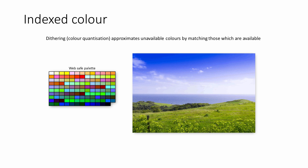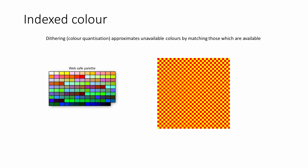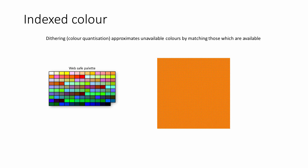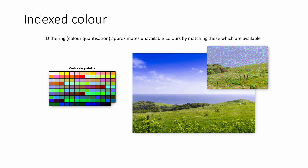Dithering works by putting colours that are available next to each other in a way that creates the illusion of colours that are not available. For example, suppose an image was using a palette without orange in it. To create the illusion of orange, red and yellow pixels can be matched like this. As long as the pixels are small enough, the human eye will be deceived. However, dithered images tend to have a grainy or speckled appearance when viewed up close.